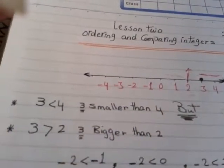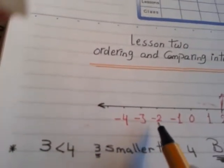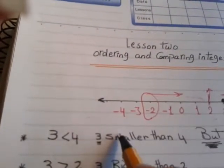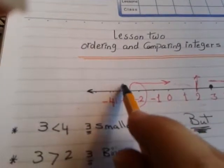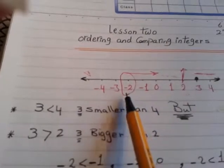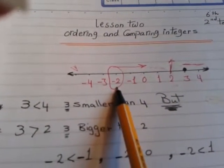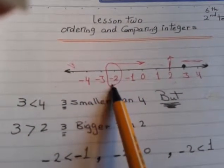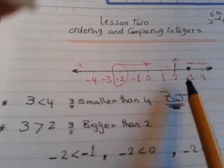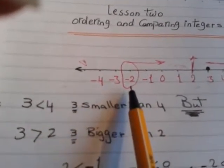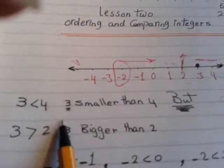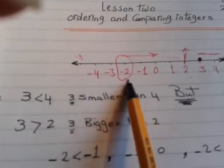We apply the same logic to negative numbers. Take negative two: all numbers to the right are bigger than negative two. So negative one is bigger than negative two, zero is bigger than negative two, one, two, three, four are all bigger than negative two. And to the left: negative three is smaller than negative two, negative four is smaller than negative two.